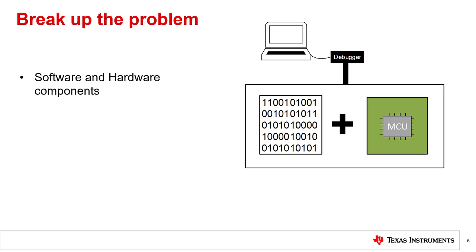First, let's explore breaking the problem down into parts. Embedded systems are typically comprised of hardware and software working together, and it can sometimes be difficult to figure out where a problem is occurring. Software may not operate correctly if an underlying hardware problem is occurring and vice versa. During development of a project, one typically has external factors such as a debug chain attached to a target MCU.